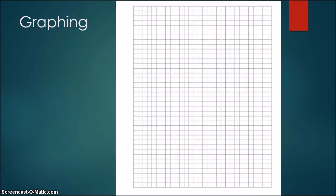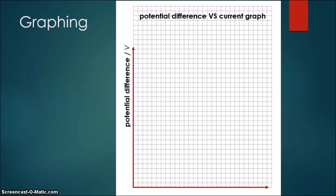Once you have enough data, you can draw a graph. In this experiment, you are supposed to draw a potential difference versus current graph. Potential difference will be on the vertical axis and current values will be on the horizontal axis.